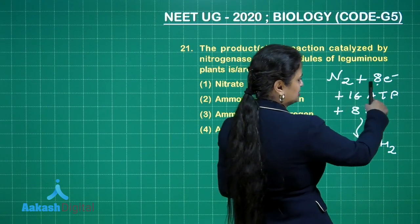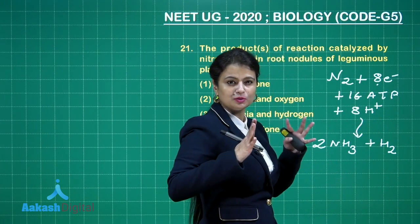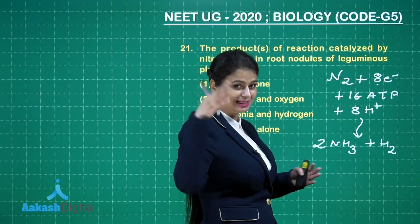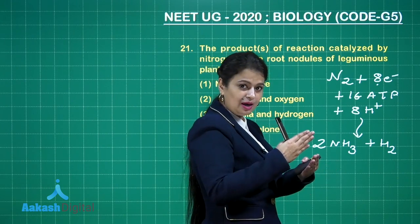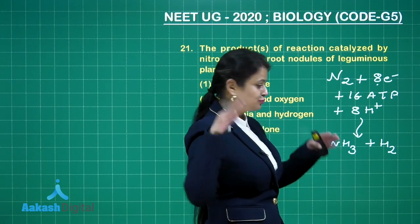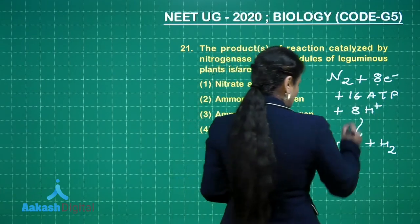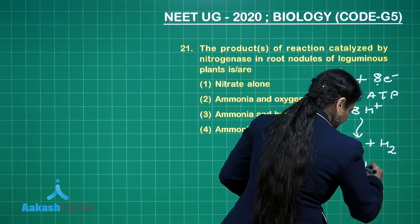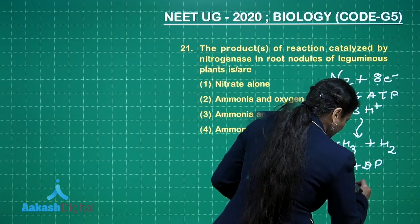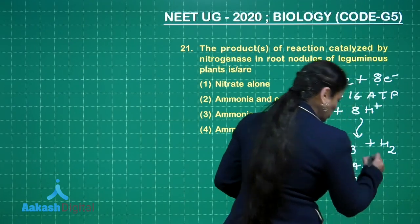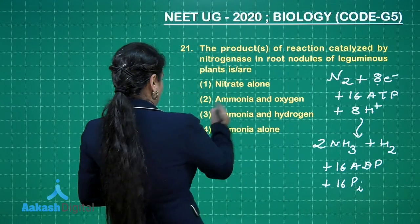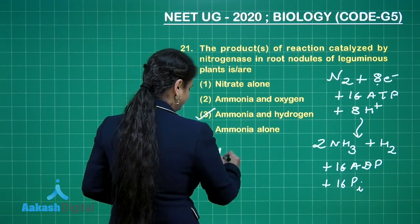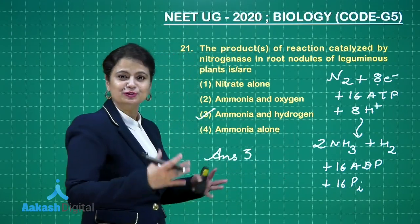16 ATP energy is utilized — the terminal phosphate bond in ATP undergoes breakdown and energy is released so this process can occur. The 16 ATP are broken down into 16 ADP along with 16 Pi (inorganic phosphate). So the correct answer is option number three: ammonia and hydrogen are formed.